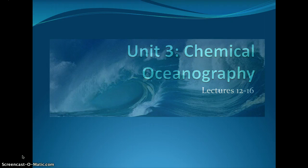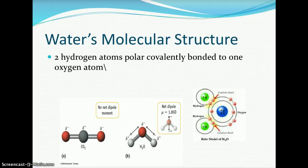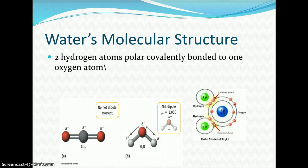Unit 3 Chemical Oceanography, Lectures 12 through 16. Our first lecture is Lecture 12: The Water Molecule. When we look at water's molecular structure, it is composed of two hydrogen atoms that are polar covalently bonded to one oxygen atom. In a polar covalent bond, the valence electrons are shared between atoms, but unequally — the shared electrons are distributed unevenly between the oxygen and hydrogen atoms, giving the water molecule its polarity.